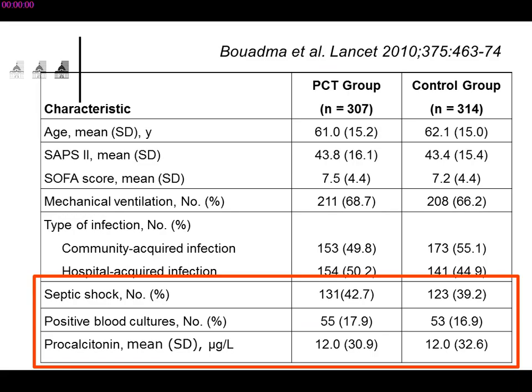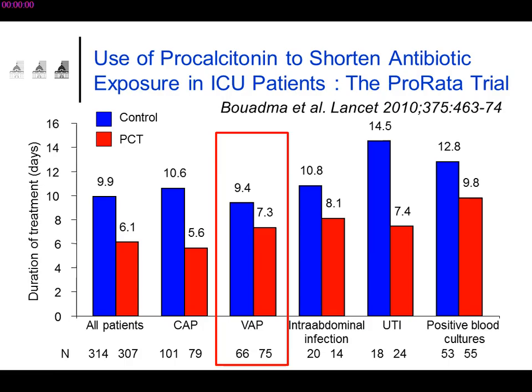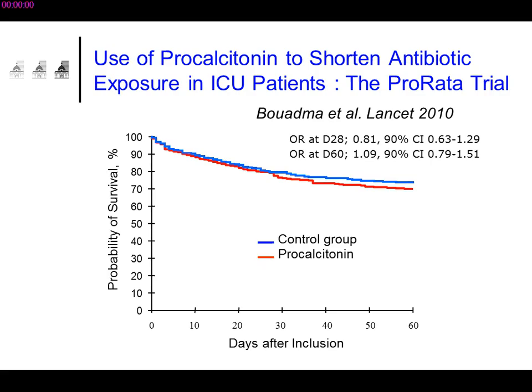Robust data from randomized trials show that with this marker, you can discontinue antibiotics earlier — including in very severe patients. Compared to a control group managed conventionally, for ventilator-acquired pneumonia the total duration of antibiotic treatment in the control group was 9.4 days. With this marker, it is possible to safely reduce the duration because mortality is not impacted.